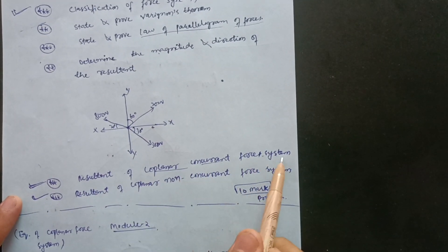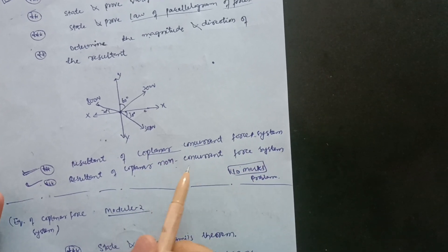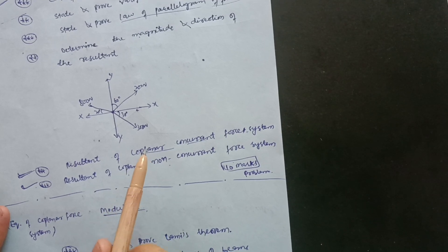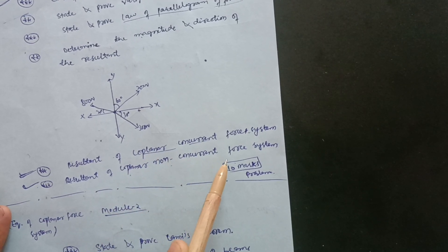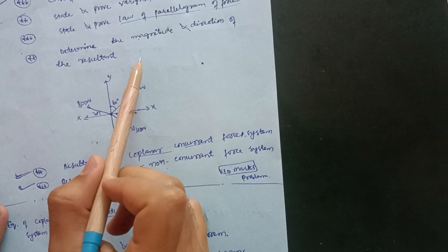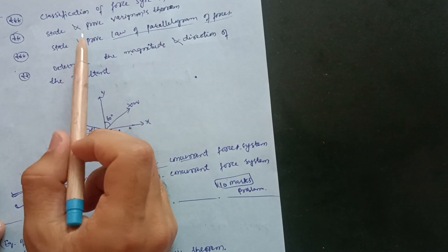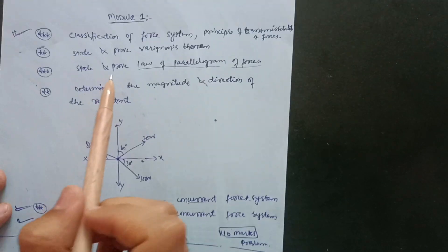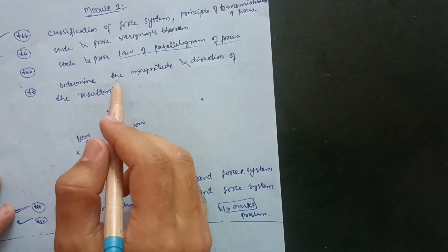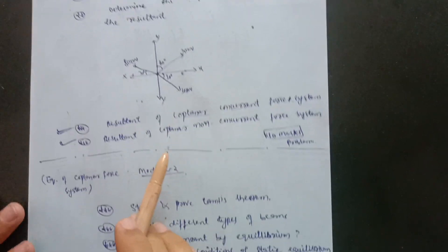Next, focus on the resultant of coplanar concurrent force systems and the resultant of coplanar non-concurrent force systems. Definitely 10 marks will be there on this concept. You can go through your model question papers and refer to 18-scheme papers for questions. Try three to four problems from this concept. Note that there is intermixing of questions, so it is not possible to predict which part a question will come from.